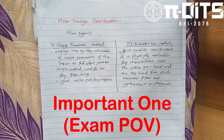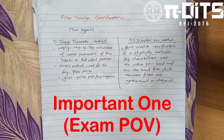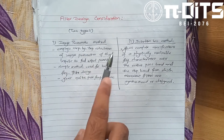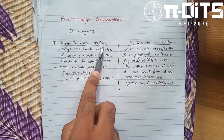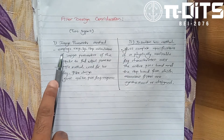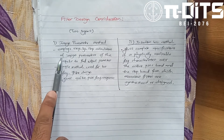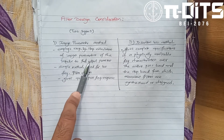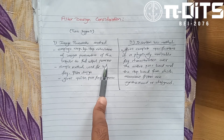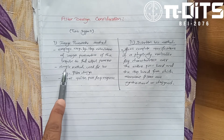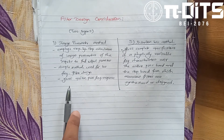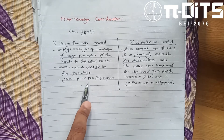Why are we talking about filter design considerations? We have two considerations: the image parameter method and the insertion loss method. The image parameter method involves step-by-step calculation of image parameters. This is a low frequency filter design and is only a simple method. However, the frequency response is quite poor.